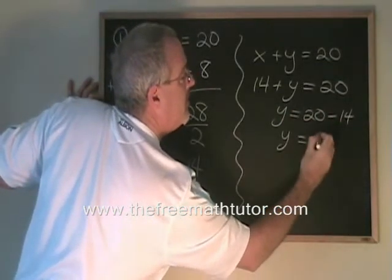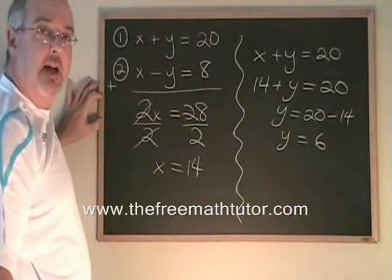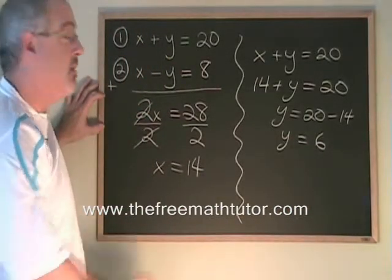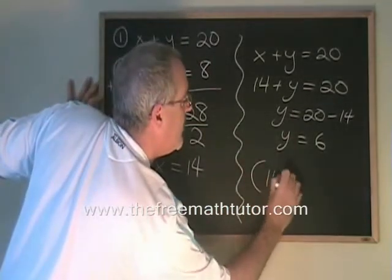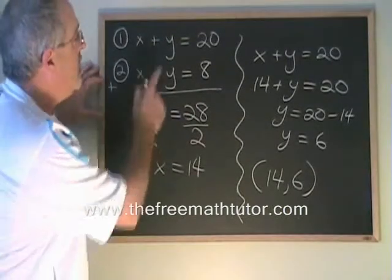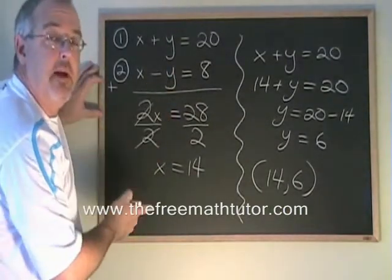Y is equal to 6. The answer for this system of equations, the point of intersection of these two lines, is going to be 14, 6. Adding two equations together is what makes elimination work.